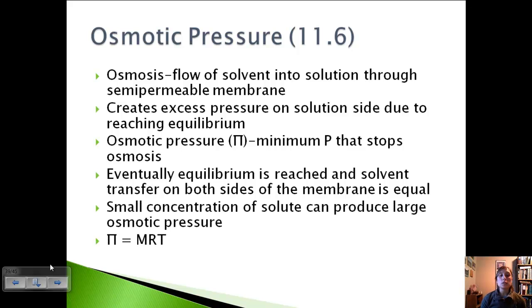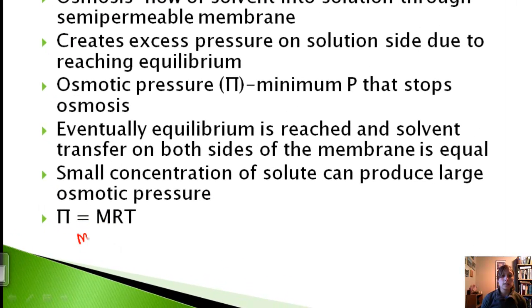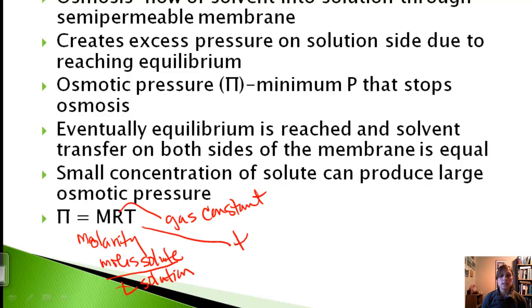Osmotic pressure works really well when there's a small concentration of solute because they can still produce a really large osmotic pressure. That's why osmotic pressure is really helpful. To solve for osmotic pressure, it's equal to capital M, which is molarity instead of molality, which is moles solute over liter of solution. R is our gas constant, and T is our temperature.